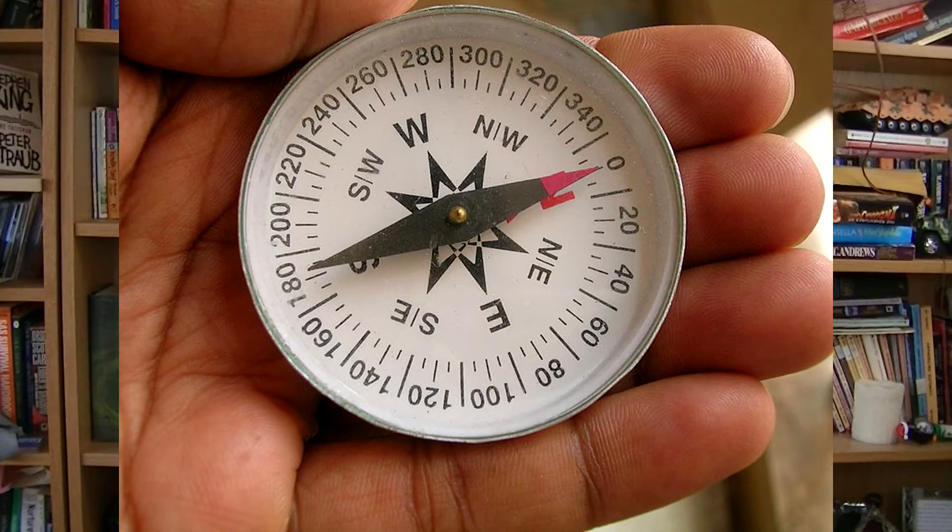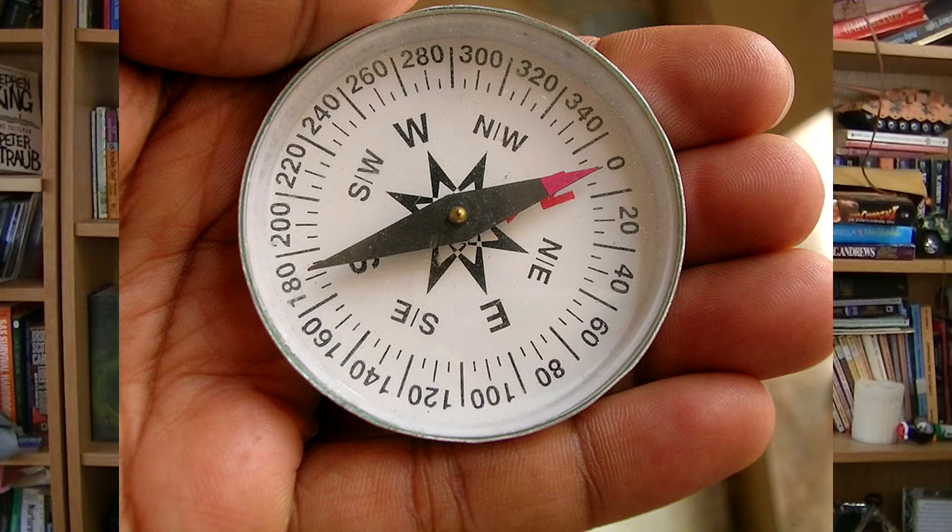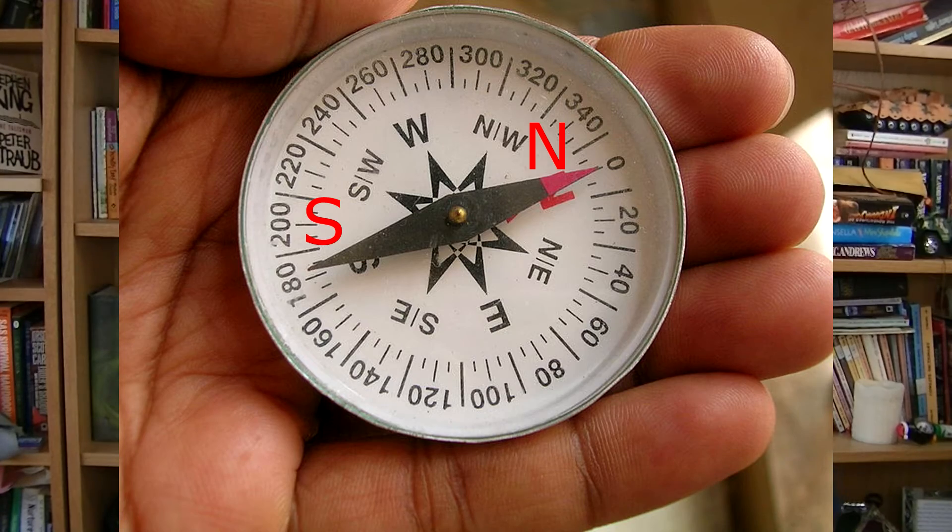If we're going to understand this, we have to think about how a compass actually works. The needle of a compass is actually a small magnet. And that small magnet has its own north pole and south pole. This is the north pole of the compass needle, and this is the south pole of the compass needle. The pointer is the north pole.